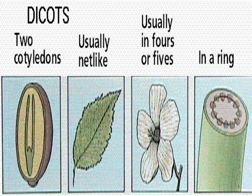Dicots have two cotyledons, leaves are usually network-veined, flower parts are usually in fours or fives, and their vascular bundle is arranged in a ring.